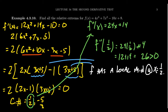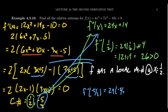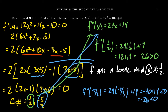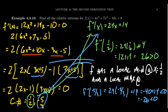Now plugging in x = -5/3: f''(-5/3) = 24(-5/3) + 14. Since 24 divided by 3 is 8, this gives 8(-5) + 14 = -40 + 14 = -26. It's the fact that it's negative that matters. If the second derivative is negative, the function is concave down at a horizontal tangent line, which must be a maximum value. So f has a local maximum at x = -5/3. To summarize: f has a local minimum at x = 1/2 and a local maximum at x = -5/3.